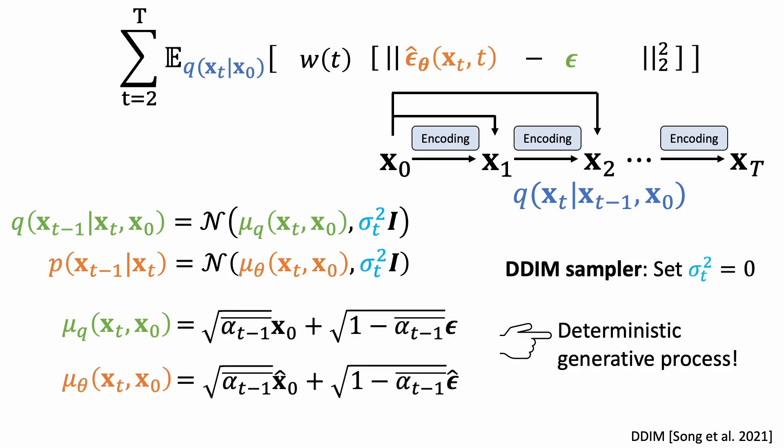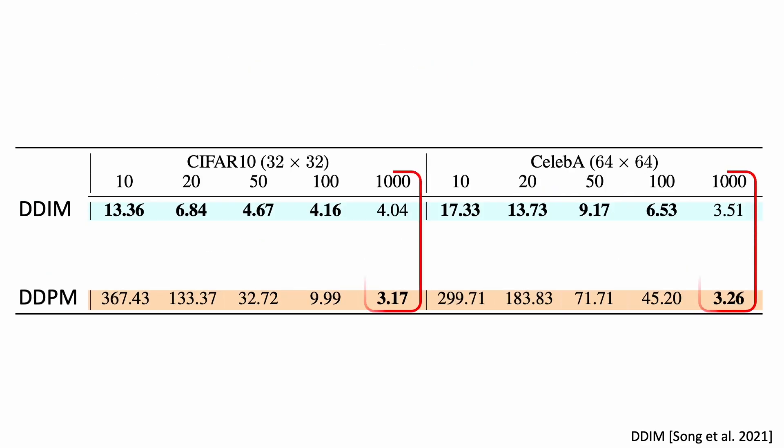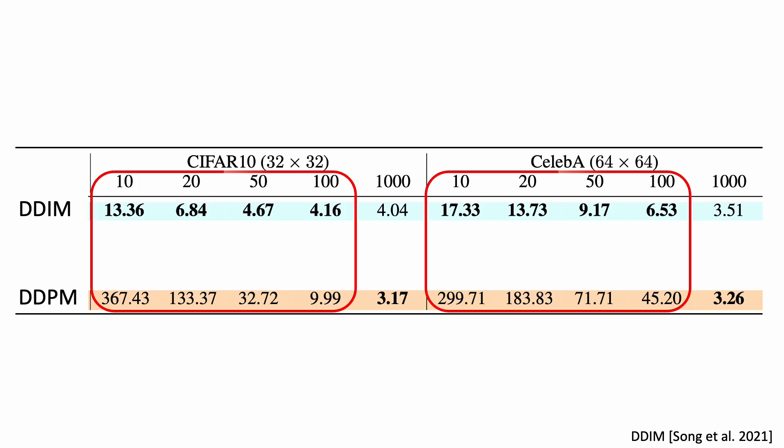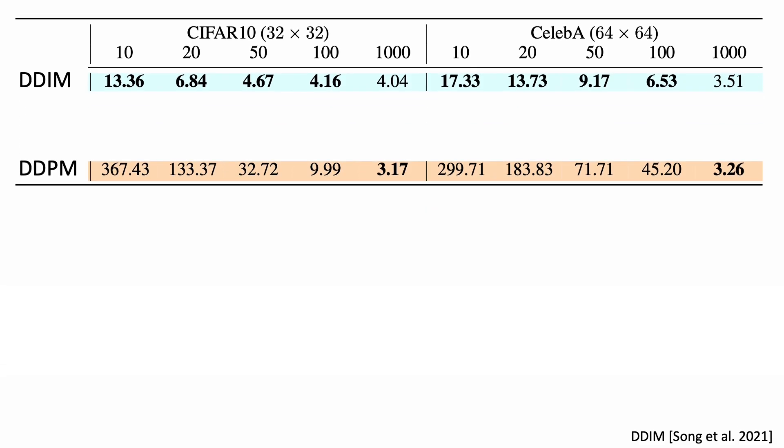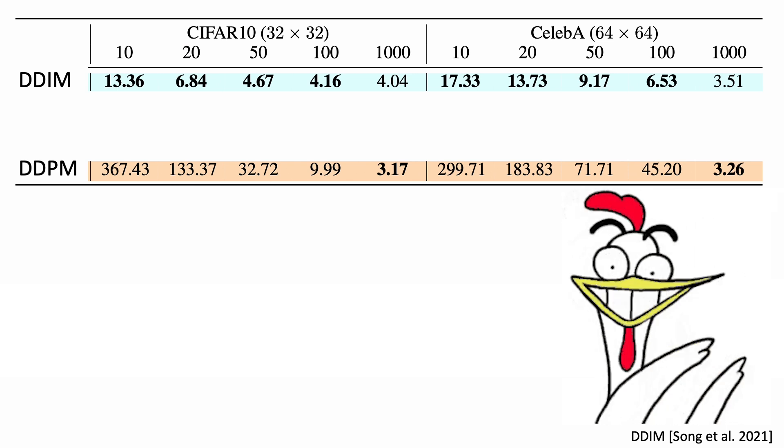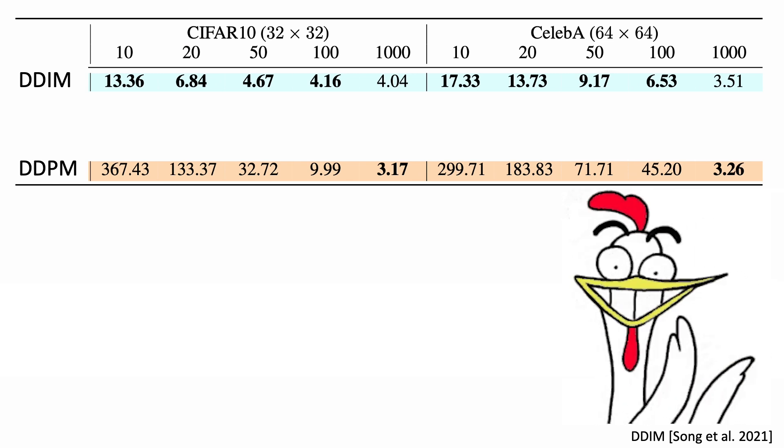Here is the quantitative evaluation. With 1000 denoising steps, the DDPM did perform better. But when we reduce the number of denoising steps, the quality of DDPM quickly degrades, while the results from DDIM remain decent. The best thing is that we don't need to retrain the model, we just need to take the model trained with the DDPM objective and accelerate it with a DDIM sampler. But even with the DDIM sampler, it still requires quite a few steps.